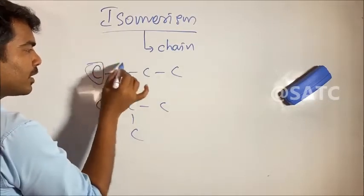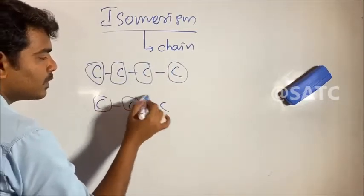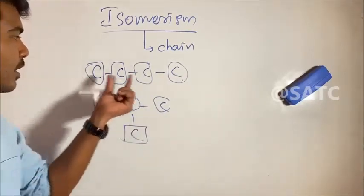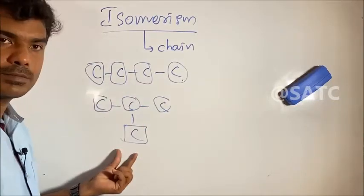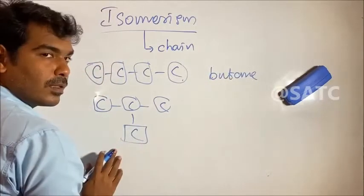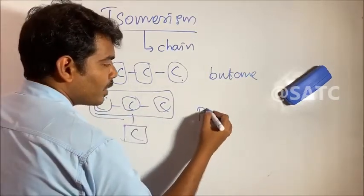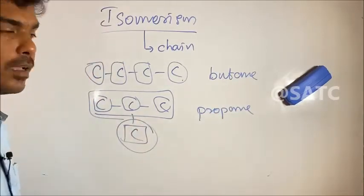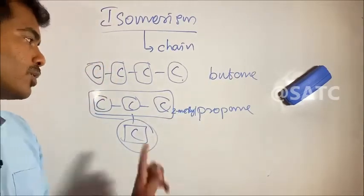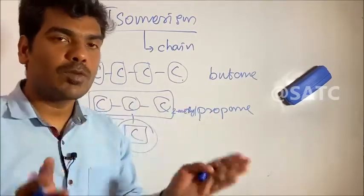In chain isomers, you can have a straight chain: 1, 2, 3, 4 carbons. Or you can have a branched chain: 1, 2, 3 carbons in the main chain with a branch. We select the longest chain. There is a branch — we call it 2-methyl. It is a branch, but it has the same chemical formula: hydrogen count gives C4H10.